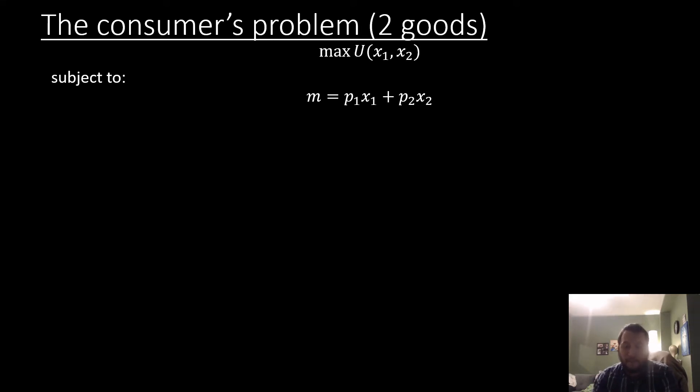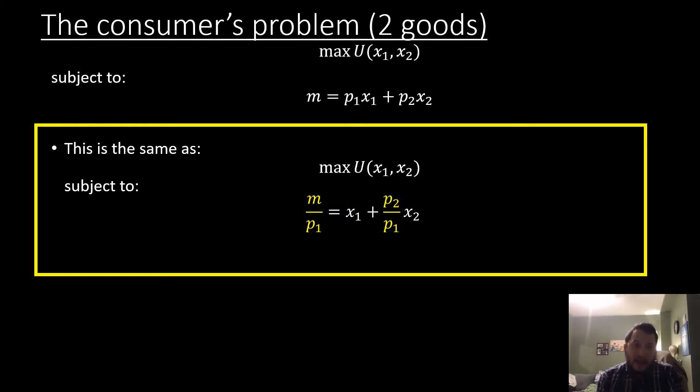Note that this is the same thing as maximizing our utility function subject to this new budget constraint, which is simply just a transformation of the original budget constraint where we divide both sides of this equation by p1. In this case we see that x1 has no coefficient on it, which would be our price.